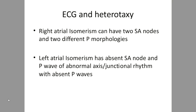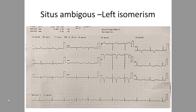In heterotaxy, ECG may not be very useful. Right atrial isomerism can have two SA nodes with two different P-wave morphologies. More useful is left atrial isomerism, where there is no SA node and you have an abnormal P-wave axis, making situs evaluation and subsequent interpretation difficult. In situs ambiguus with left isomerism, since the P-wave axis is abnormal, it is better not to attempt further ECG interpretation.